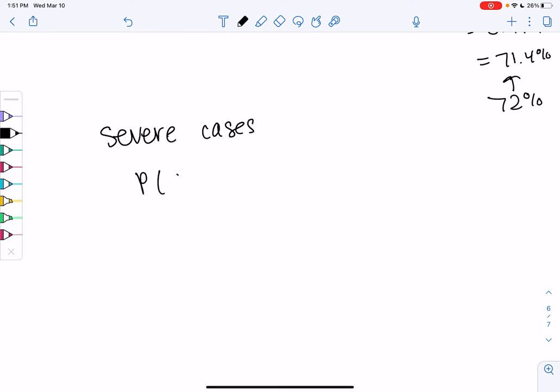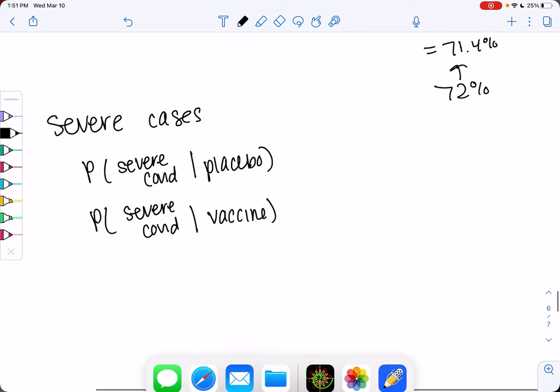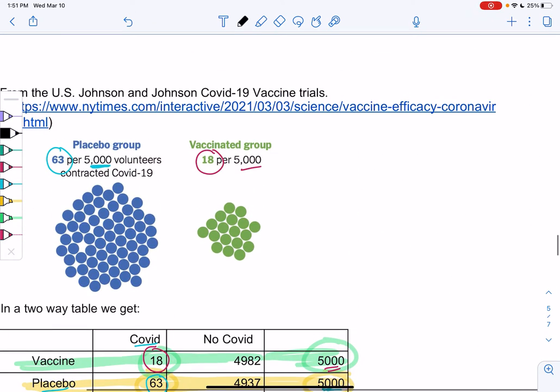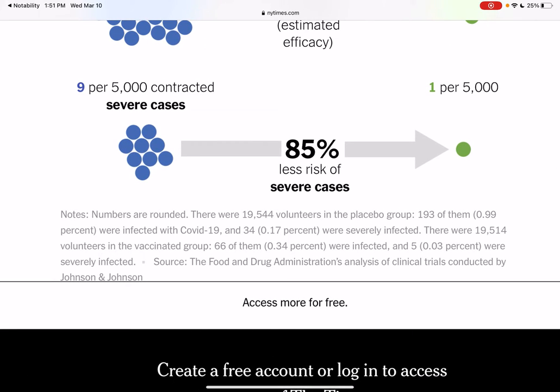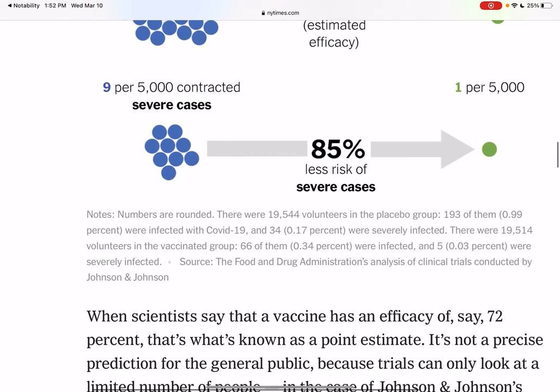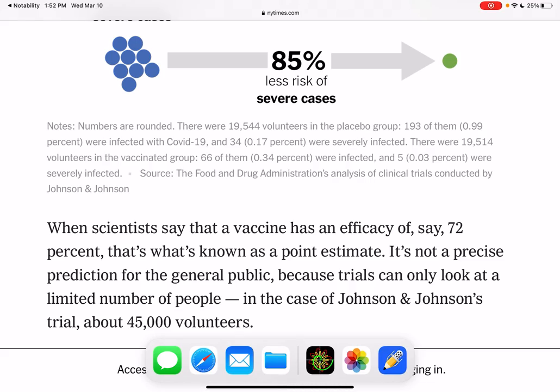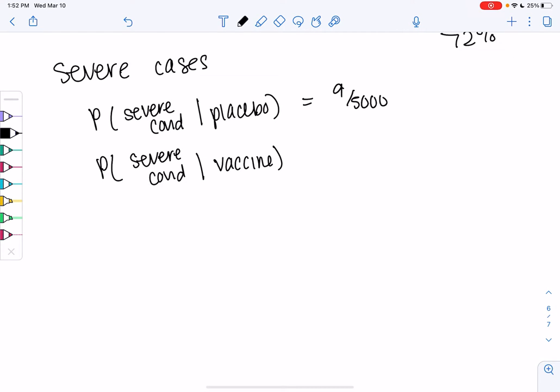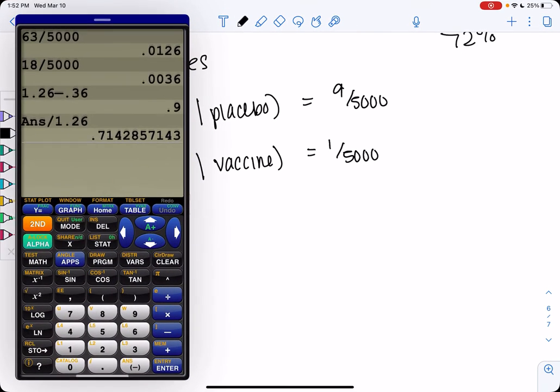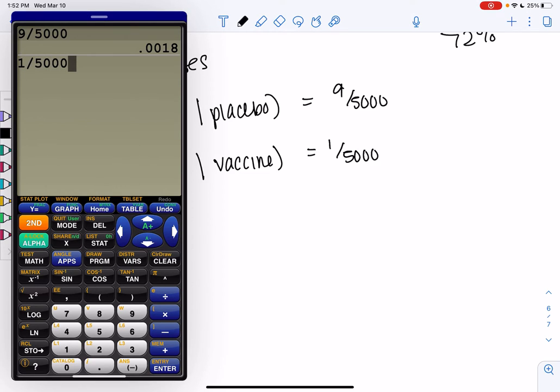So the probability of severe COVID given the placebo, we'll do that first. And then we'll do probability of severe COVID given the vaccine. So it's not in a two-way table, but it is the same information. So it'll be 9 out of 5,000 for the placebo that's on the left. And we have 1 out of 5,000 for the vaccine group. So only 1 person got severe COVID, so that's promising. So 9 people in the placebo group got severe COVID, and then only 1 out of 5,000 got severe COVID in the vaccine group.